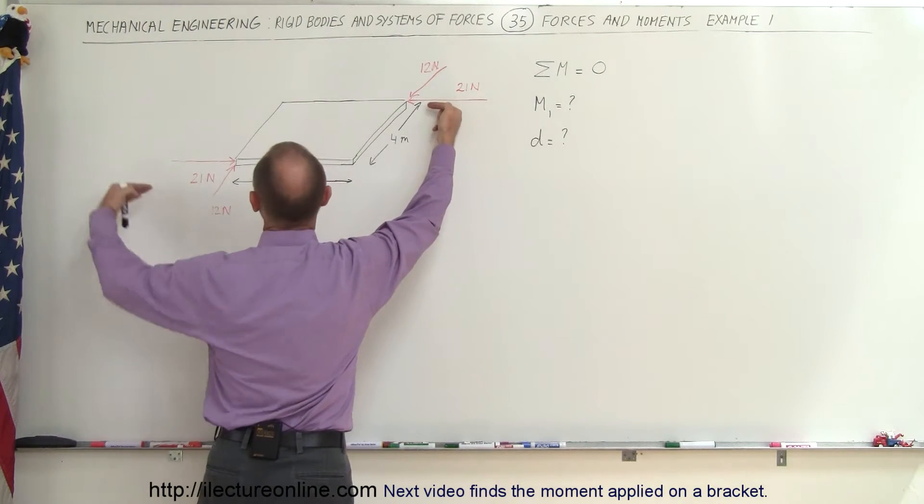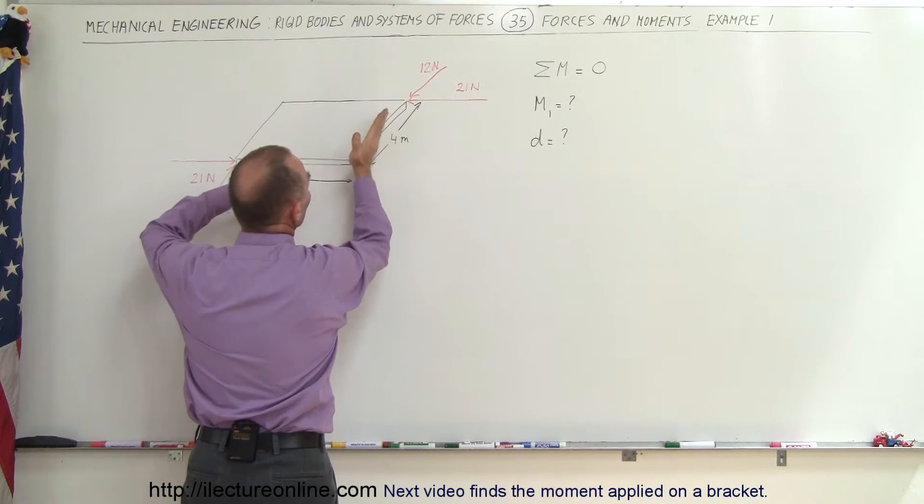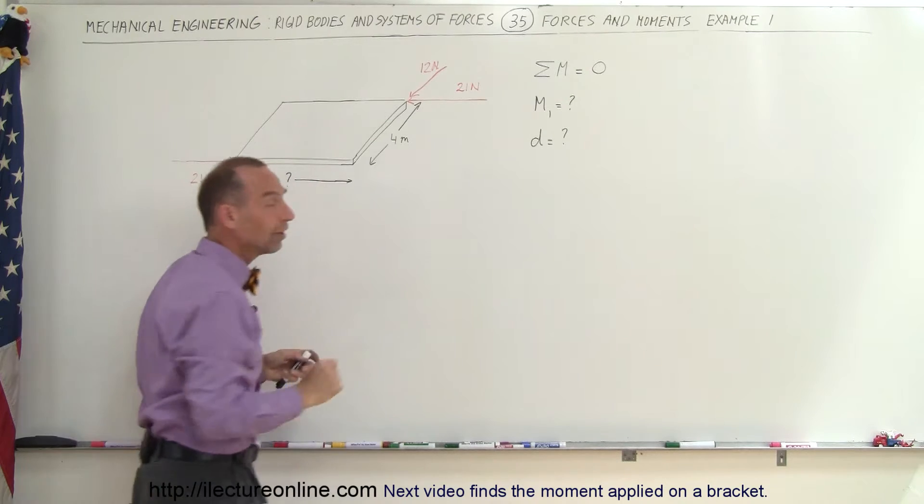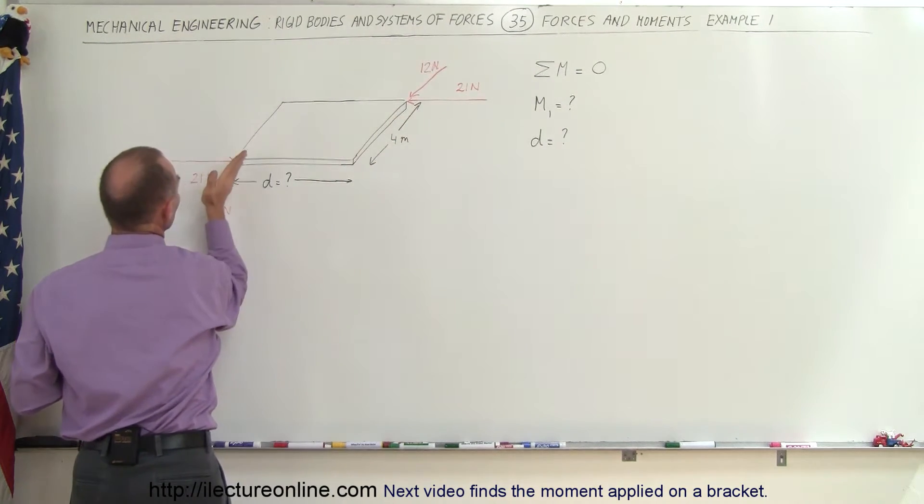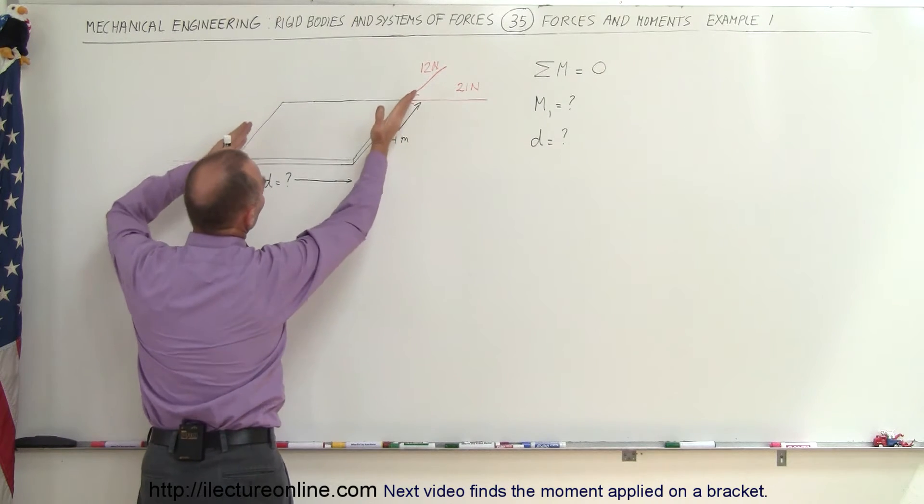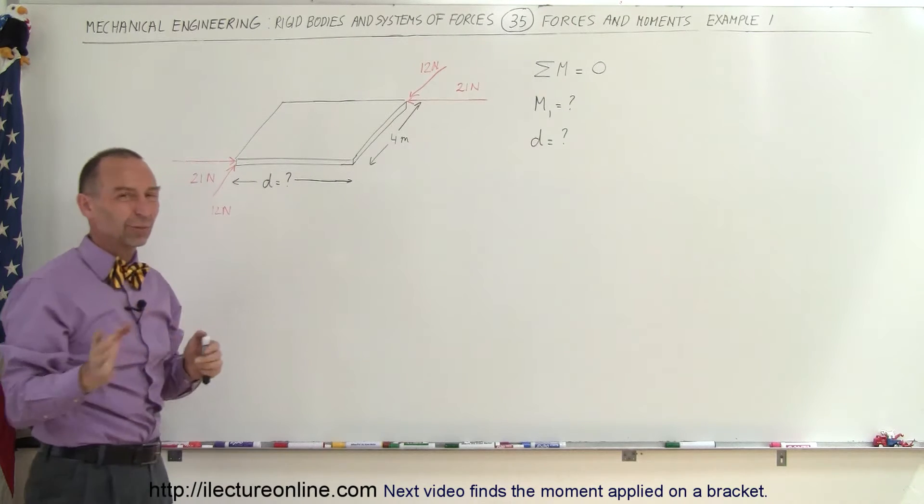We have a 21 Newton force going this way, a 21 Newton force going this way. The perpendicular distance between the lines of action is 4 meters. Then we have a second set of forces, 12 Newtons going this way and 12 Newtons going this way. The distance between the lines of action here is unknown, we'll call it distance d, and that's one of the things we're trying to find.